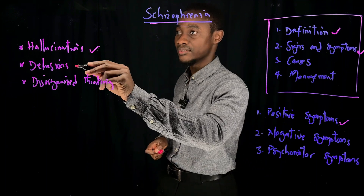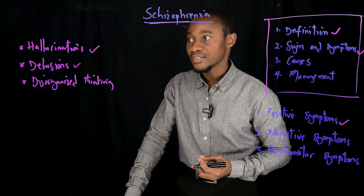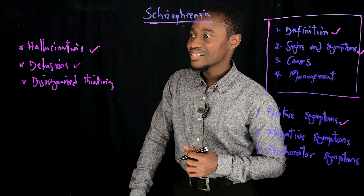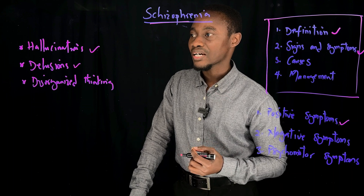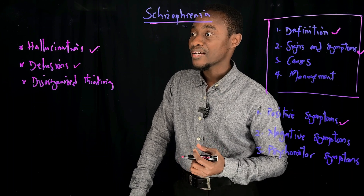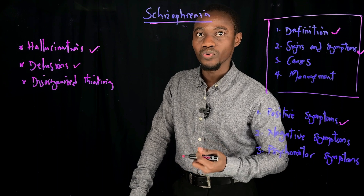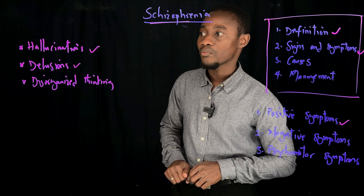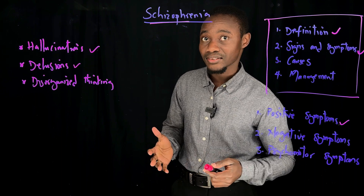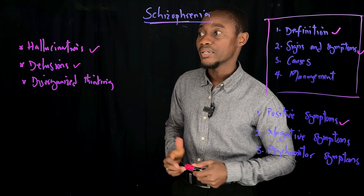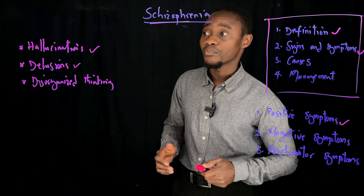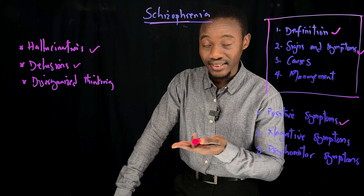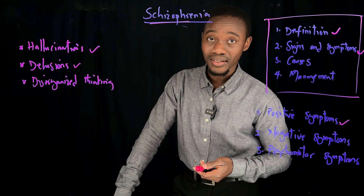Now let's move on to delusions. Delusions are fixed false beliefs that remain unchanged even in the presence of conflicting evidence. A person with delusions holds on to false beliefs such that nothing is going to change what they are thinking or believing. An example is paranoid delusion, where someone is extremely suspicious of the actions or intentions of other people — for instance, strongly believing that someone wants to poison them. Another common example is believing that people are talking about you on the TV when, in actual fact, no one really is.